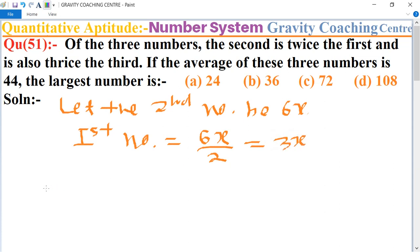And third number equals... third number is thrice, so 6x upon 3 equals 2x.